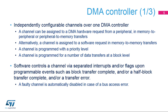Each channel of the DMA controller is independently configurable. A channel can be assigned to a DMA hardware request from a peripheral in peripheral-to-memory or memory-to-peripheral data transfers. Alternatively, a channel is assigned to a software request in memory-to-memory data transfers. A channel is programmed with a priority level and for a number of data transfers at a block level. The software can control a channel via separated interrupts and/or flags upon programmable events, such as a block transfer complete and/or a half-block transfer complete and/or a transfer error.